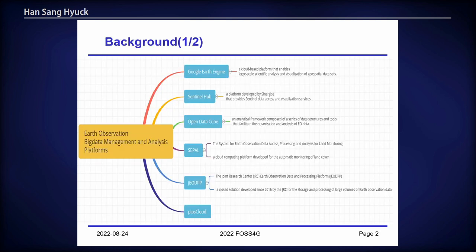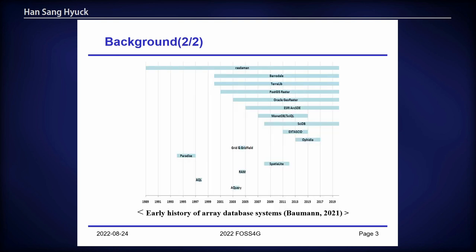There are many Earth observation big data management and analysis platforms such as Google Earth Engine, Sentinel Hub, Open Data Cube, etc. For performing Earth observation, it is necessary to process big satellite image information in real-time and analyze them with AI. For searching an area of interest in massive satellite images, many people usually use two data systems: one is a multi-dimensional array database system, and the other is a Hadoop-based Spark system.